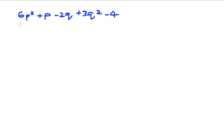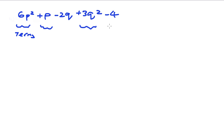So these are all called terms. This is the p term, this is the q term, this is the q squared term, and this is what we call the constant term because it doesn't have a variable — it is just a constant.